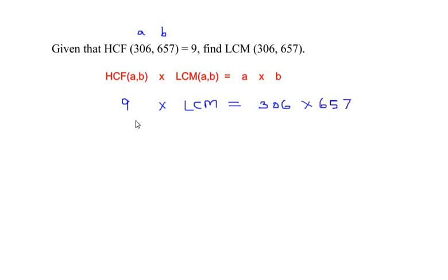Now I am going to divide on both sides by 9 to find the LCM, so this is divided by 9 and this is divided by 9. So LCM is equal to 306 times 657 divided by 9.